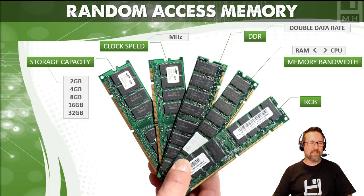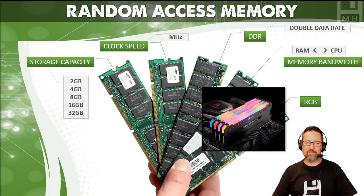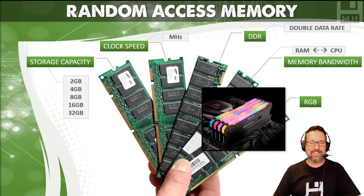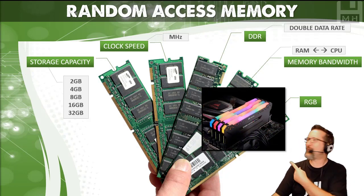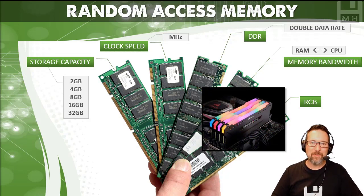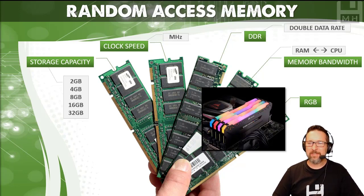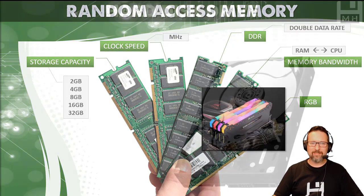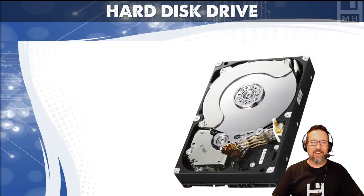So there you go — storage capacity, clock speed, DDR, memory bandwidth, and RGB. RGB is not really a specification of RAM — it's something new for gamers who want to show off. It's literally having colors on your RAM. It's a real thing!